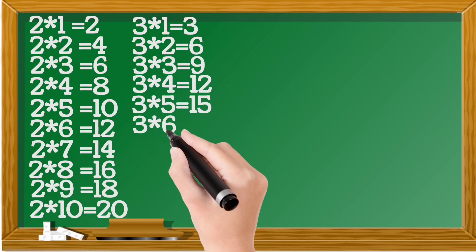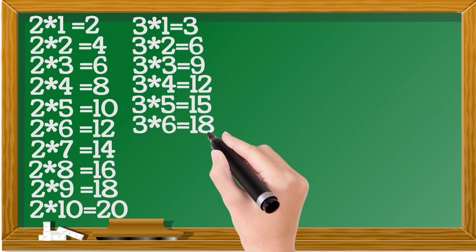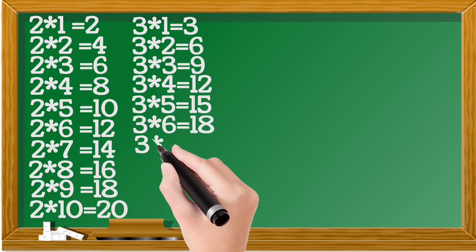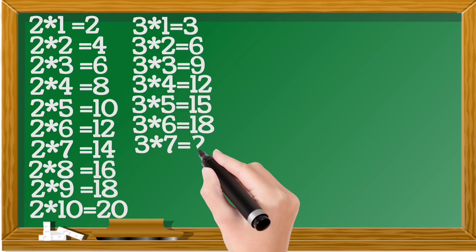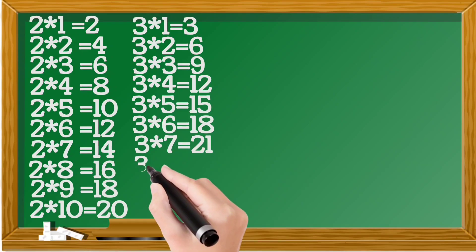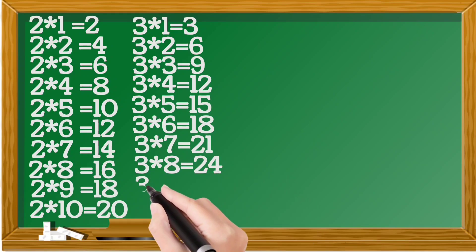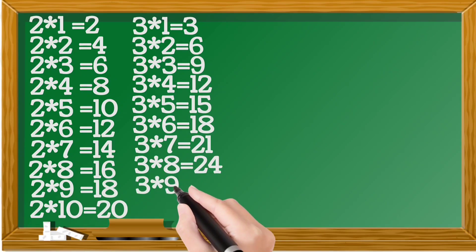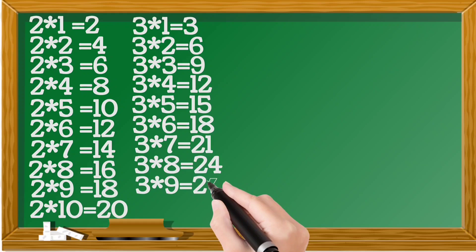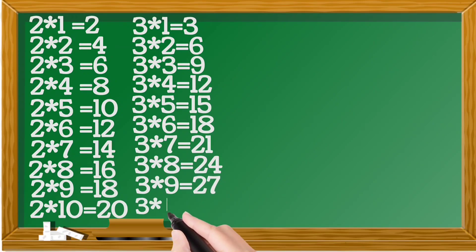3x6=18, 3x7=21, 3x8=24, 3x9=27, 3x10=30.